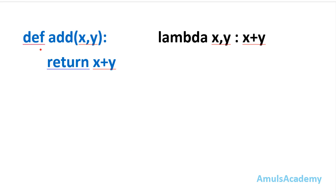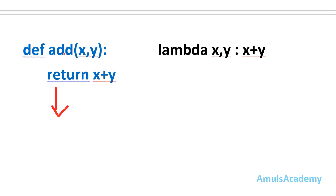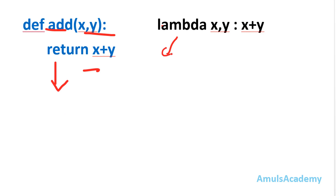Here is an example. For normal functions in Python we can see it starts with the def keyword, followed by the function name, parameters, and the function body. For the lambda function, we can see the keyword lambda, then the arguments — in this example there are two arguments x and y — and then the expression. So this is the syntax of lambda.